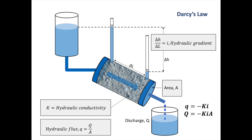Let's summarize Darcy's law, which we have explored using our permeability experiment. The very important formulas you need to remember are: Q equals KIA, and small q equals KI — don't forget the minus sign in front. The hydraulic gradient is the driving force behind groundwater flow and is measured as delta H over delta L. We also need to know the hydraulic conductivity of the formation and the area through which the groundwater flows, and then we can calculate the discharge and the hydraulic flux using our formulas.